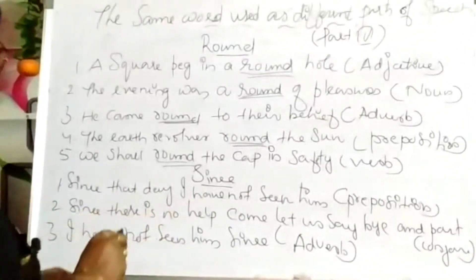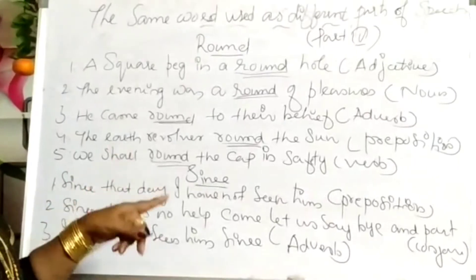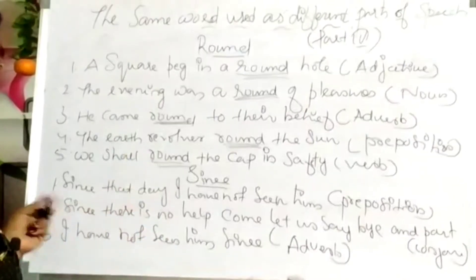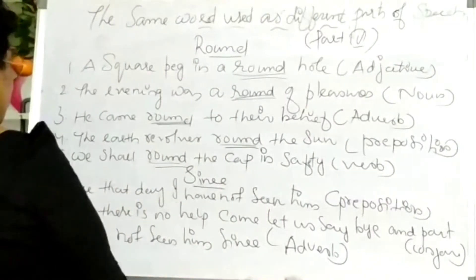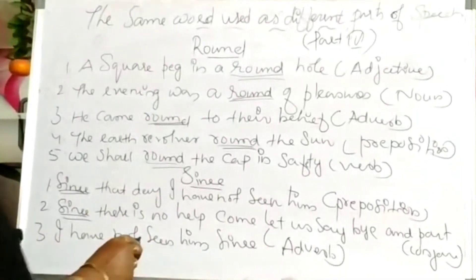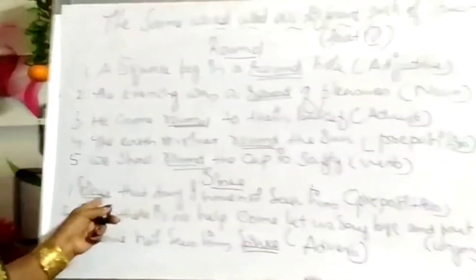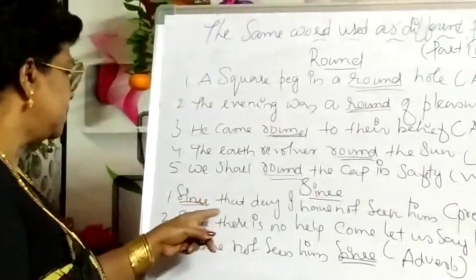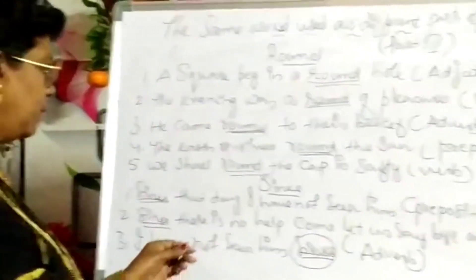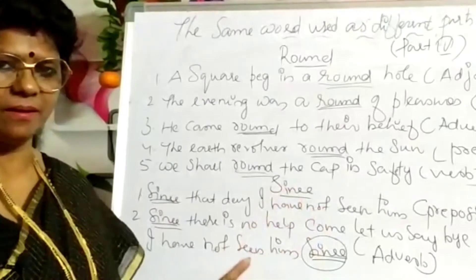Next word: 'since.' In 'Since that day I have not seen him,' that is obviously a preposition. In 'Since there is no help, come let us say bye and part,' 'since' shows a conjunction. In 'I have not seen him since,' 'since' shows an adverb. Observe that 'since' appears at the beginning of one sentence and at the end of another — prepositions can appear in different positions with particular and distinct meanings.